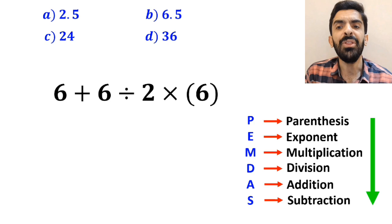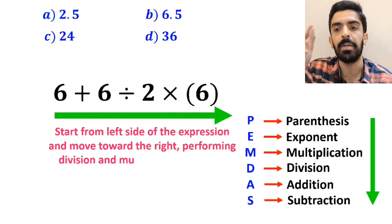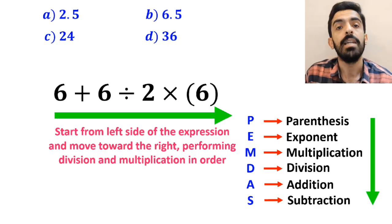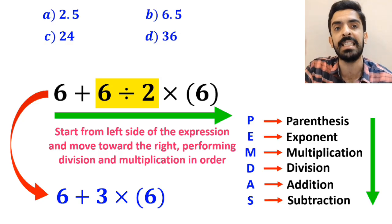In this case, the best thing to do is to start from the left side of the expression and move toward the right, performing division and multiplication in order. So, first we perform the division between 6 and 2, which simplifies this expression to 6 plus 3, then times 6.